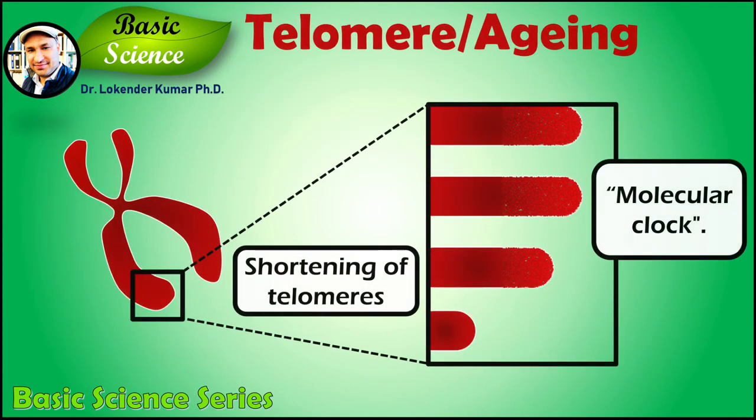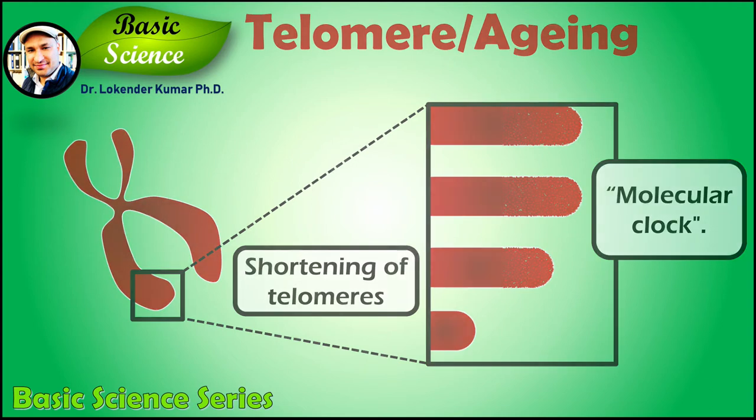In humans and other animals, cellular senescence has been attributed to the shortening of telomeres at each cell division. When telomeres become too short, the cell dies or ceases multiplying. The length of telomeres is therefore the molecular clock of the cell.